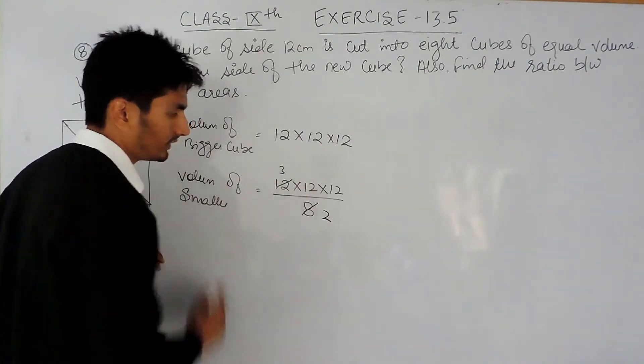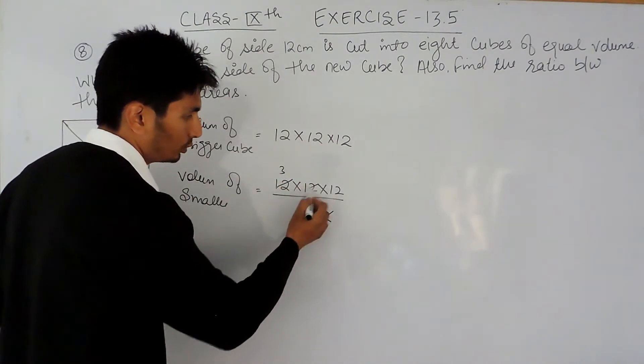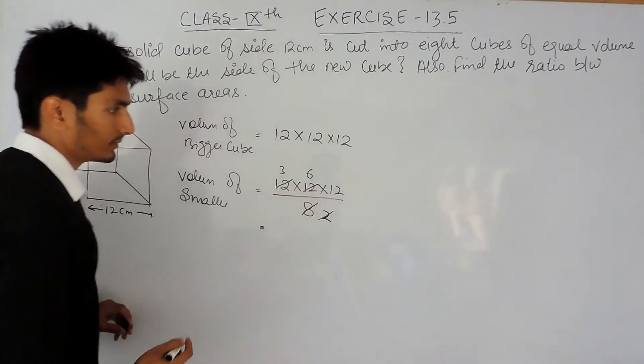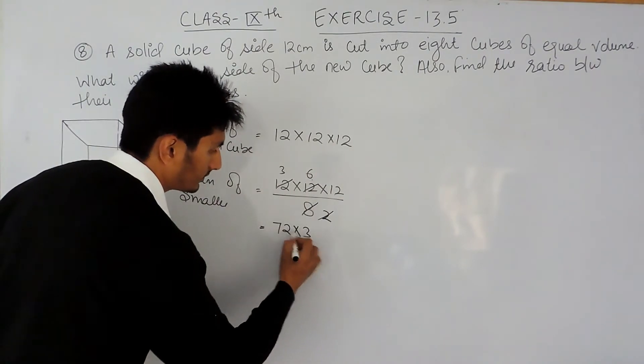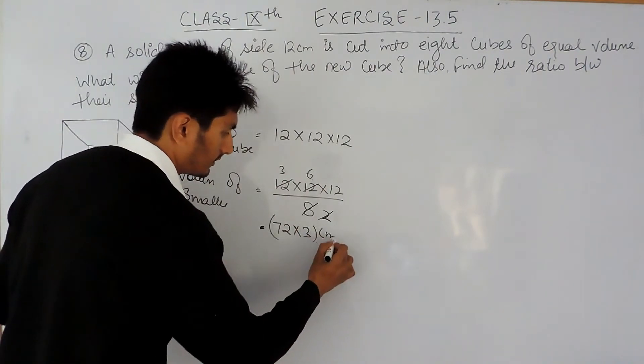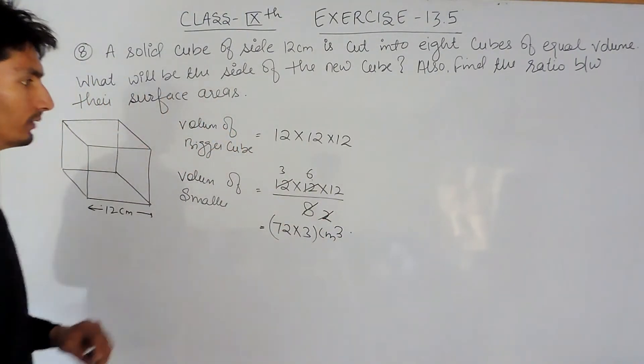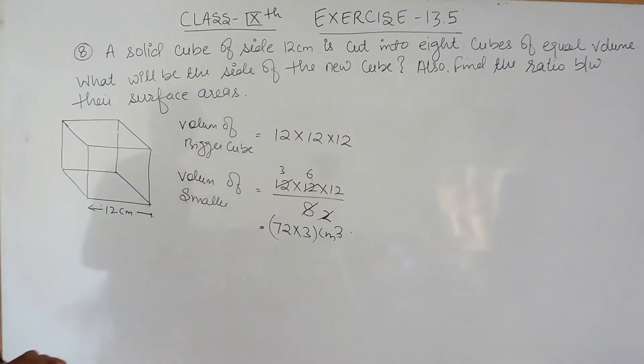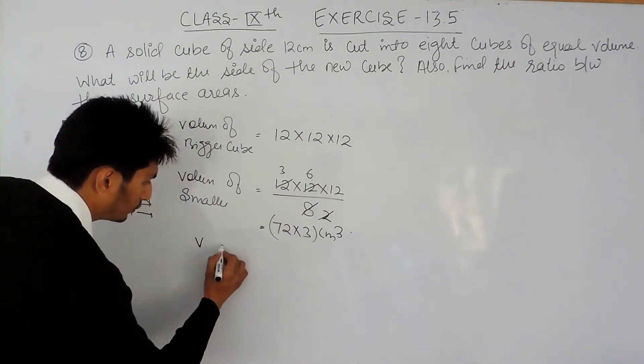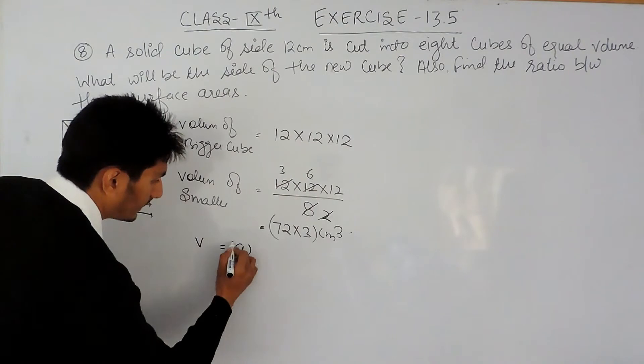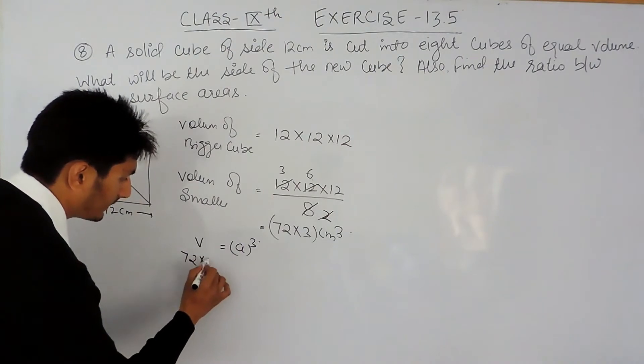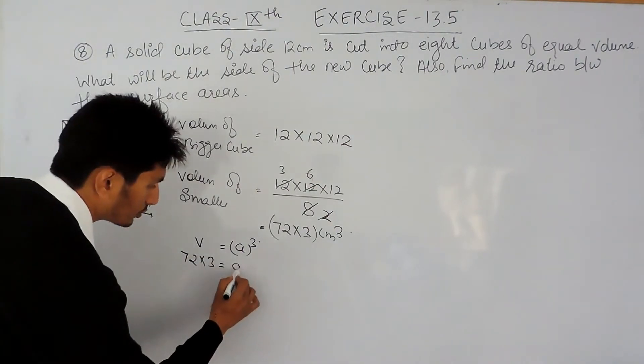So 4, 2 times, 4, 3 times, and 2, 6 times. So here it should be 12 into 6 is 72 multiplied by 3. So this centimeter cube will be the volume of the smaller cube. Now I have to find the size of this smaller cube. And volume is equal to a³.